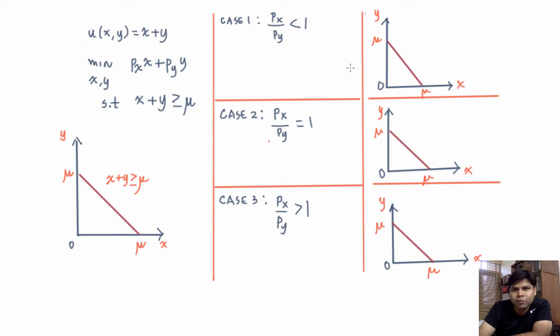So when px by py is less than 1, if you're going to plot the iso-expenditure curves, they'll be flatter than the indifference curve. So clearly the optimal point can be obtained by figuring out which one is the lowest possible iso-expenditure curve that passes through this region.